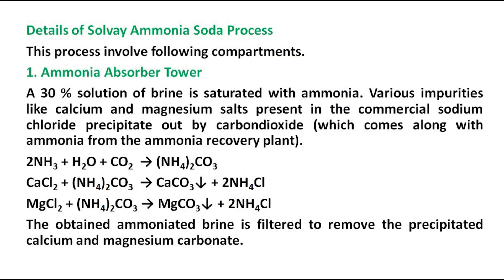Ammonia Absorber Tower: A 30% solution of brine is saturated with ammonia. Various impurities like calcium and magnesium salts present in commercial sodium chloride precipitate out by carbon dioxide, which comes along with ammonia from the ammonia recovery plant. Ammonia gas, water, and carbon dioxide react to form ammonium carbonate; calcium chloride and magnesium chloride then react with ammonium carbonate to form calcium carbonate, magnesium carbonate, and ammonium chloride. The ammoniated brine is filtered to remove the precipitated calcium and magnesium carbonate.